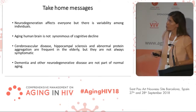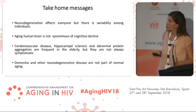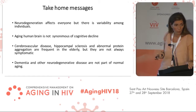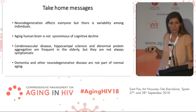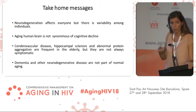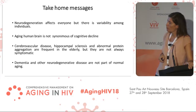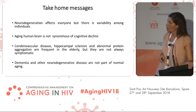My take-home messages are: neurodegeneration affects everyone, but there's a huge variability among individuals; the aging human brain is not synonymous with cognitive decline; we have very frequent conditions in the elderly such as cerebrovascular disease, hippocampal sclerosis, and abnormal protein aggregation — proteins also observed in neurodegenerative diseases. Finally, it is not normal to have cognitive decline with age, and dementia and other neurodegenerative diseases are not part of normal aging. It is very important to assess patients properly, diagnose them better, and give them the best management and treatment we can. Thank you for your attention.